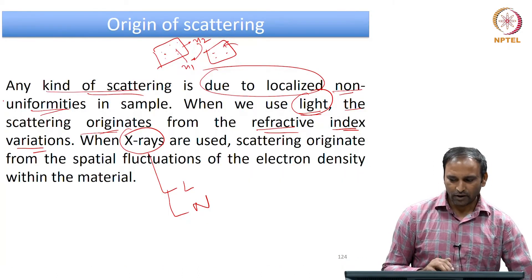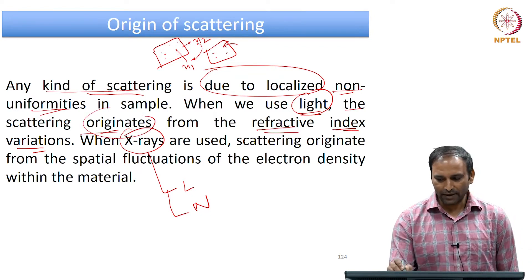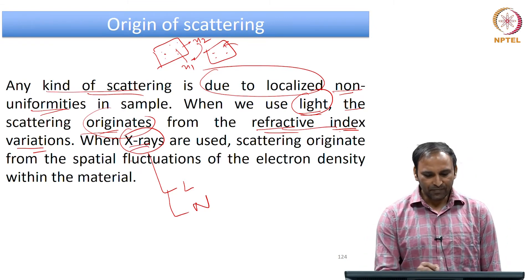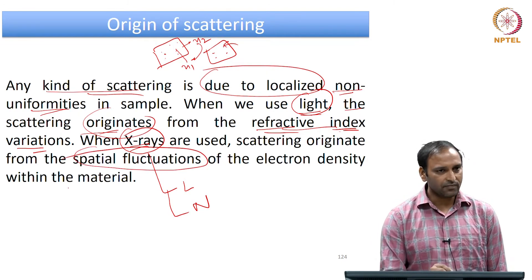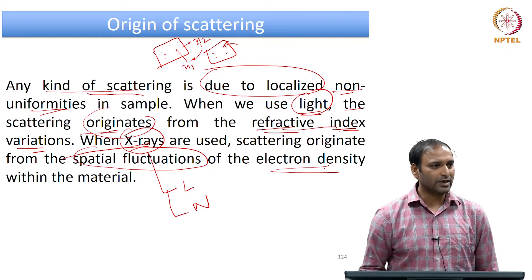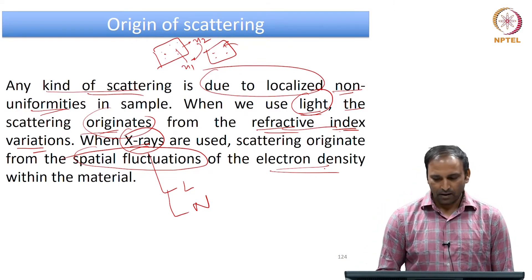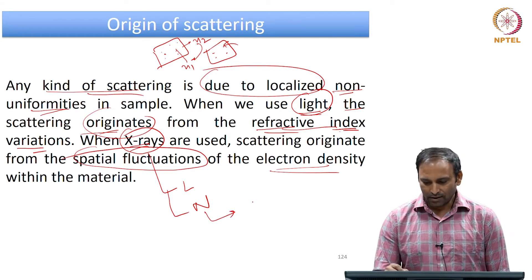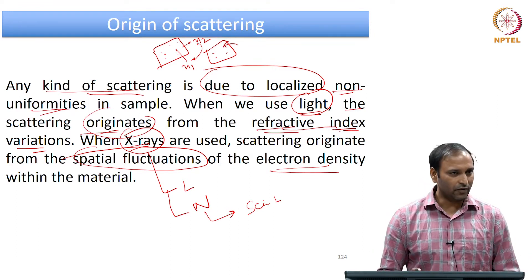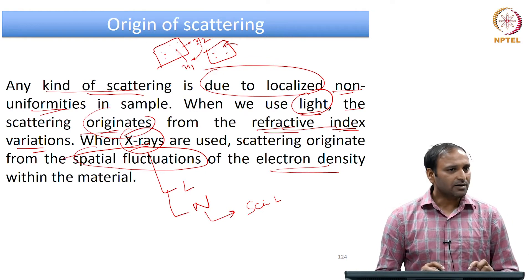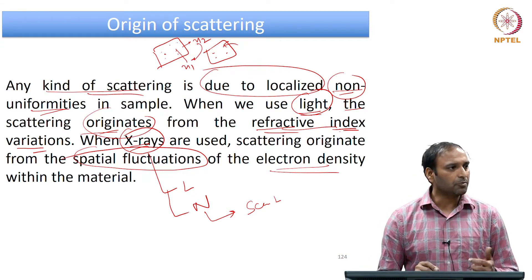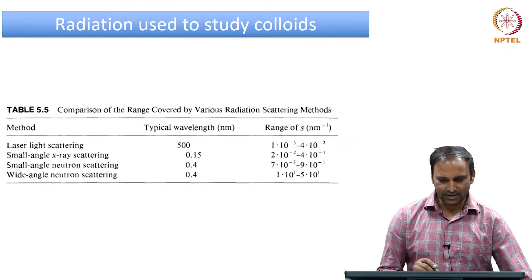So therefore, depending upon the light source, in scattering the scattering originates from either the refractive index difference, or if you use x-rays, what is important is the spatial fluctuations in the electron density within the material. Similarly, when you use neutrons, people talk about what is called a scattering length density difference. The idea is there has to be some heterogeneities or non-uniformities - some difference in particular properties - and that is when you can carry out a scattering experiment.